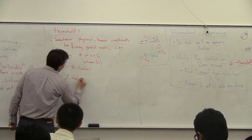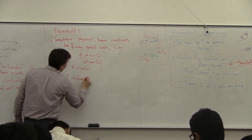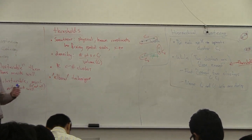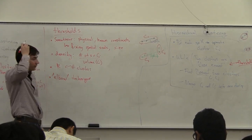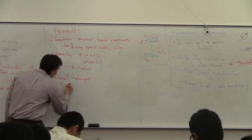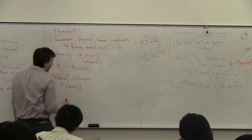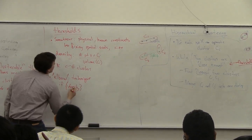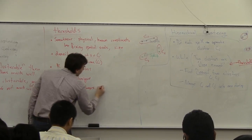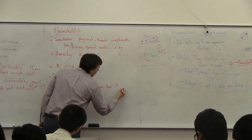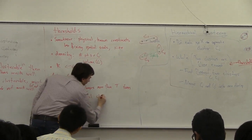There's another technique called the elbow technique. This is where you're tracking some parameter and not setting an absolute threshold, but looking at the difference between two values — such as if the density or size changes more than tau from k to k+1 clusters.